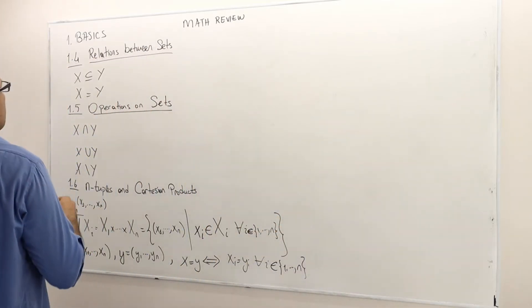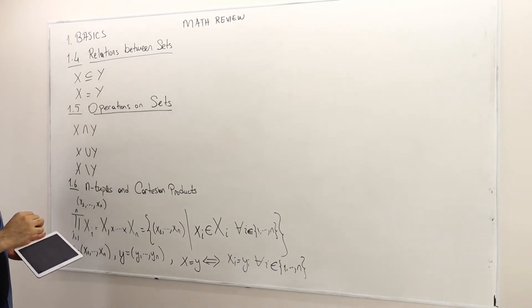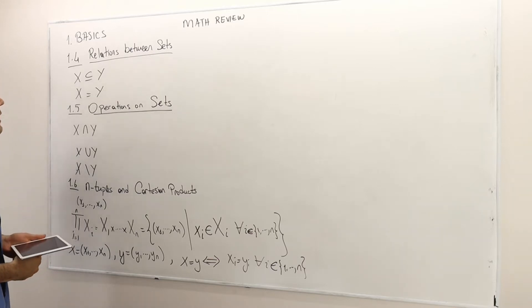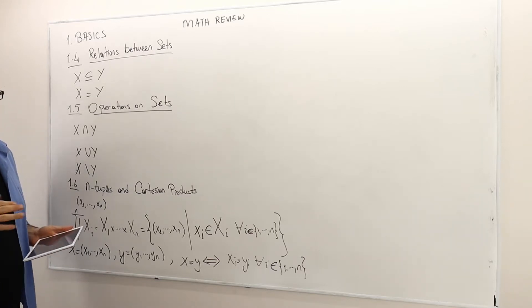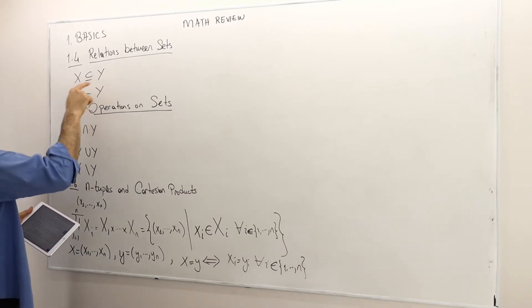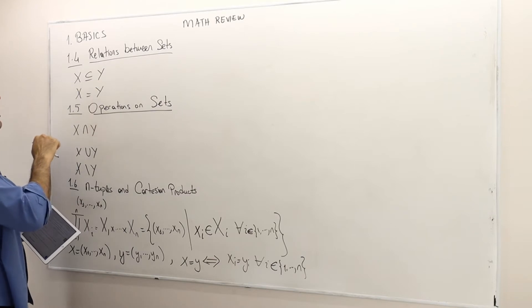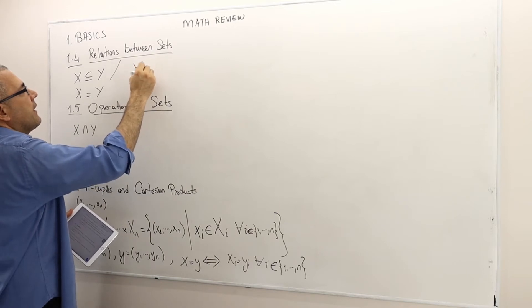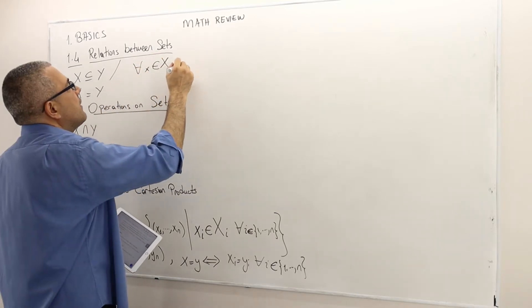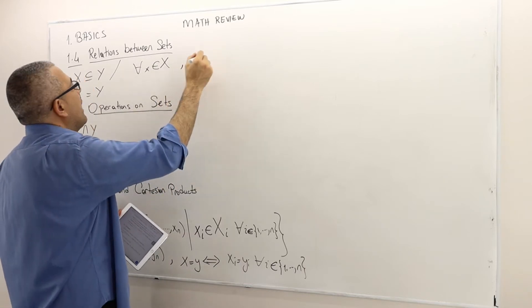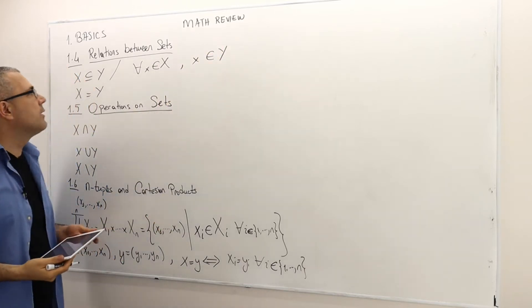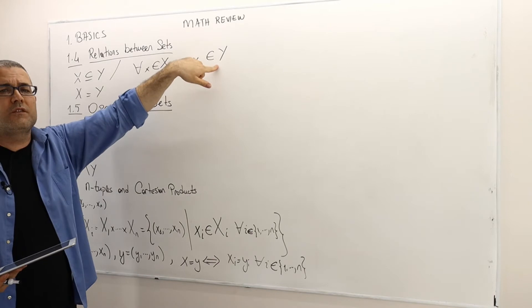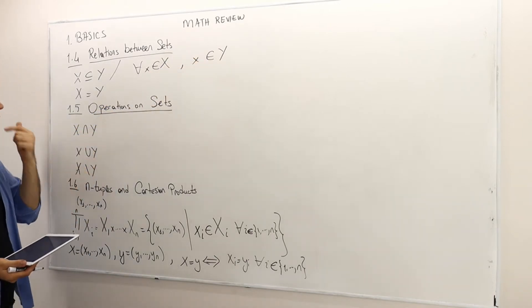Let's continue in subsection 1.4, relations between sets. You already know all these, but let's quickly review them and try to be as formal as we can. So this means the set X is a subset of Y. Logically, what does that mean? For any x which is an element of X, x is also an element of Y. So if an element is in set X, it must also be in set Y. That is what subset means.